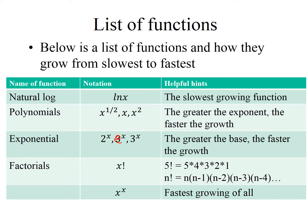Polynomials grow according to their exponent. So the higher the exponent, the faster it grows. x cubed grows faster than x squared. The same is true for exponentials. The base determines how fast it grows. So 3 to the x grows faster than e to the x, which grows faster than 2 to the x.